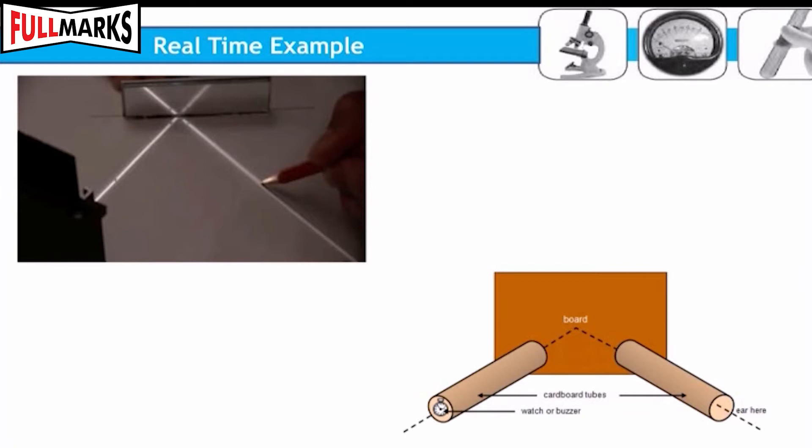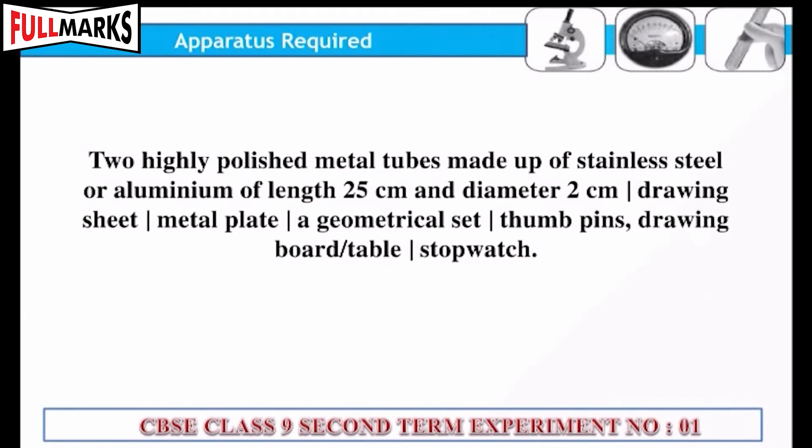Apparatus required: Two highly polished metal tubes made up of stainless steel or aluminium of length 25 centimeters and diameter 2 centimeters, drawing sheet, metal plate, geometrical set, thumb pins, drawing board or table, stopwatch, and metal stand.